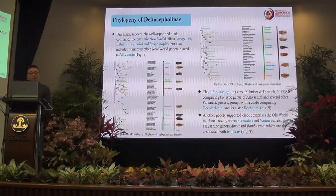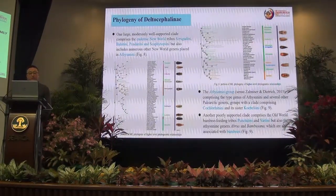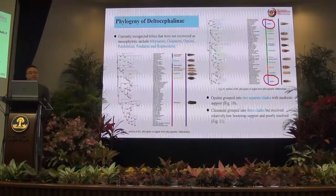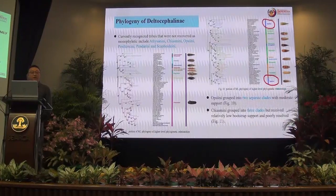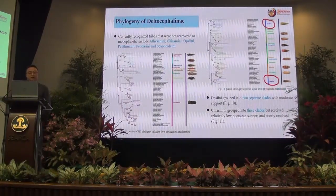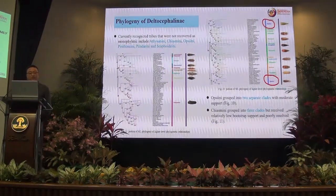Another well-supported clade comprises the Old World bamboo-feeding tribe and Batini, but also Deltocephalini genera and bamboo-associated genera. The currently recognized tribes that were not recovered as monophyletic include Asangini, Cyanini, Oxyrhachini, Antimeini, Pandanini, and Scaphytopiini in our analysis. Oxyrhachini grouped into two separated clades with moderate support. Cyanini grouped into three clades but received relatively low support and is poorly resolved.